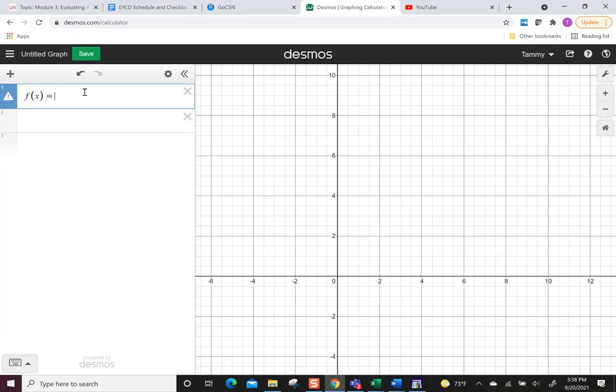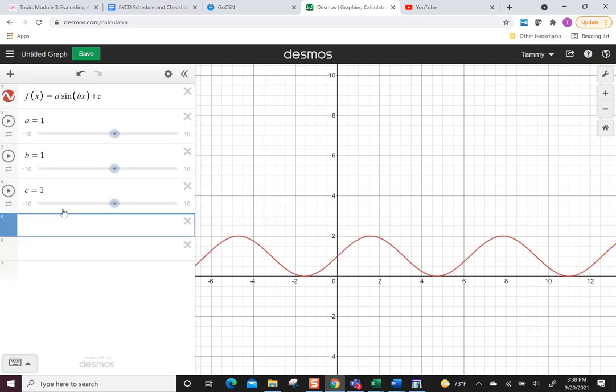Something I think is kind of fun to do is try typing this way: f of x equals a sine, I'm going to do parentheses, I'm going to put bx, let me move that out of the way and say plus c. Once I do that, Desmos recognizes a, b, and c and puts in sliders.